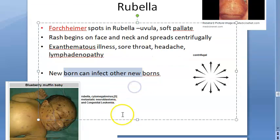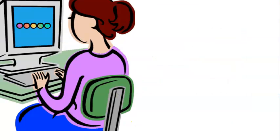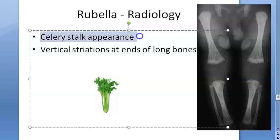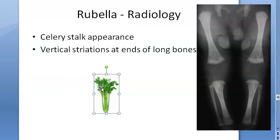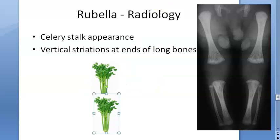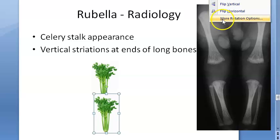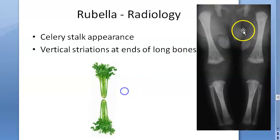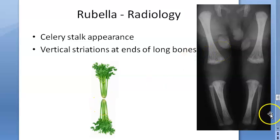Remember that a newborn with congenital rubella can infect other newborns. On radiology, the characteristic finding is celery stalk appearance — vertical striations visible at the ends of long bones on X-ray.